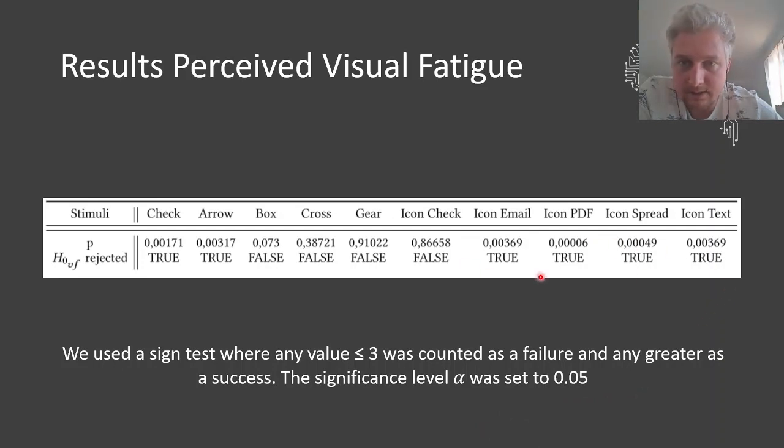We can see that the spinning stimuli almost all managed to reject the null hypothesis. Icon checkerboard did not, but surprisingly also our comparison, our control stimulus managed to do so.